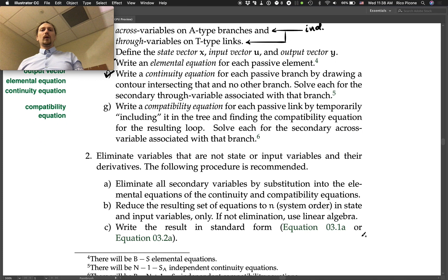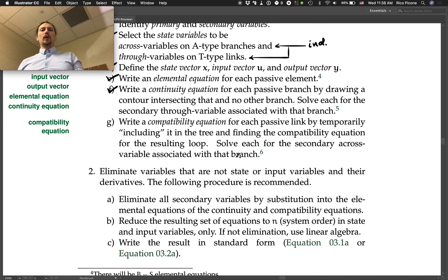Part 2 is to eliminate variables that are not state or input variables and their derivatives. The following procedure is recommended: Part a is to eliminate all of your secondary variables by substitution into the elemental equations of the continuity and compatibility equations. We solved all the continuity and compatibility equations for the secondary variable, so we can use those to substitute them into our elemental equations and eliminate all of the secondary variables in one swoop.